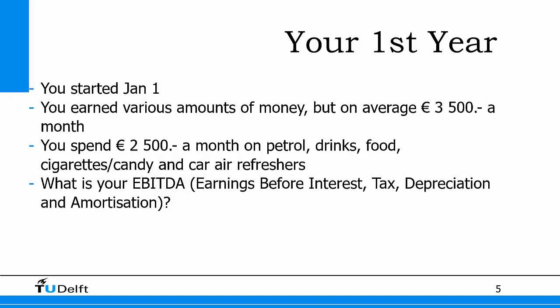So what is your EBITDA? EBITDA stands for Earnings Before Interest, Tax, Depreciation and Amortization. This is three and a half thousand minus two and a half thousand, times twelve months, giving an EBITDA of 12,000 euros for the year.